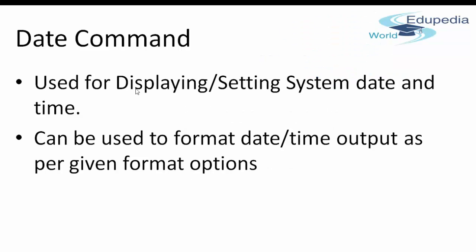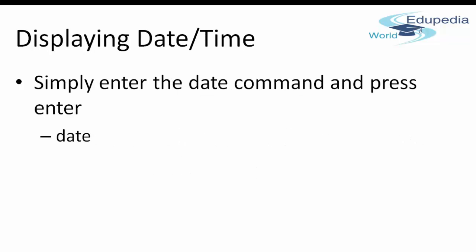The date command is used for displaying or setting the system date and time. It can be used to format the date and time output as per the given format options. Both date and time on the Linux shell are displayed by the date command, and you can also use it to set your system date and time.